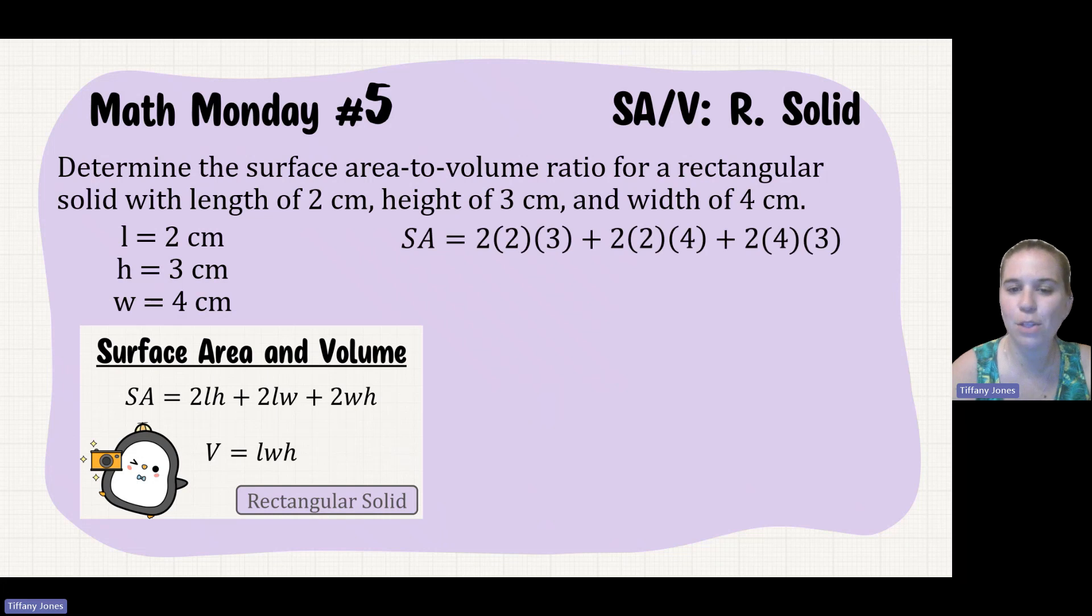So if we sub this in, that would be 2 times 2 being my length, 3 being my height, plus 2 times my length being 2, times my width being 4, plus 2 times my width being 4, times my height being 3.